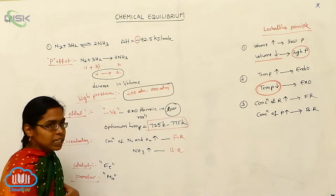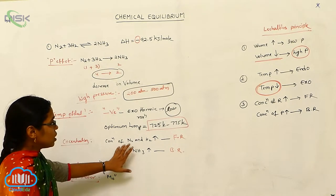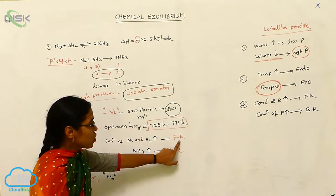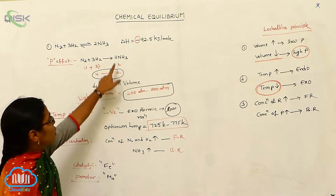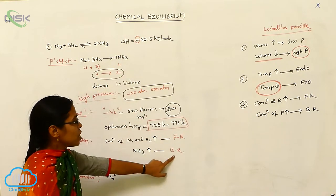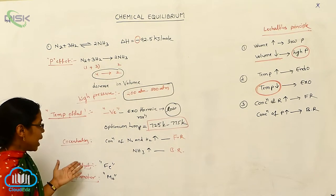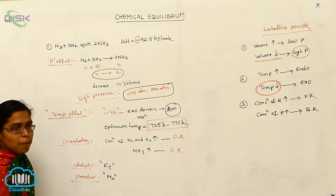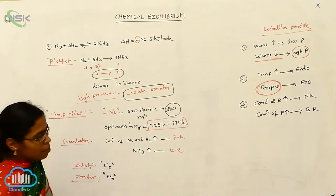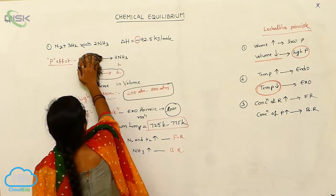For concentration: whenever the concentration of nitrogen and hydrogen (reactants) increases, the forward reaction takes place. If the concentration of NH3 increases, the backward reaction takes place. The catalyst used is iron and the promoter is molybdenum. This is the first application of Le Chatelier's principle.